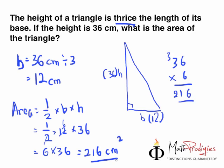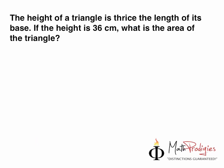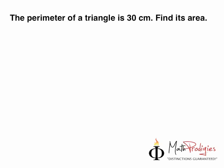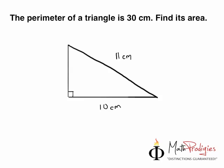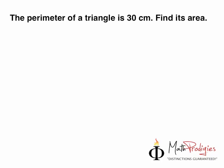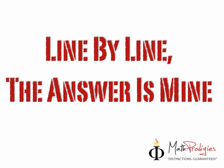Very easy! If you got it right, give yourself a high five — you are a math prodigy! Now let's move on to the question of the day, also on triangles. This week we're working on triangles only. The question is: the perimeter of a triangle is 30 cm. The hypotenuse is 11 and the base is 10 — what is the height? Find the area of this triangle. Remember the quote of the week: line by line, the answer is mine!